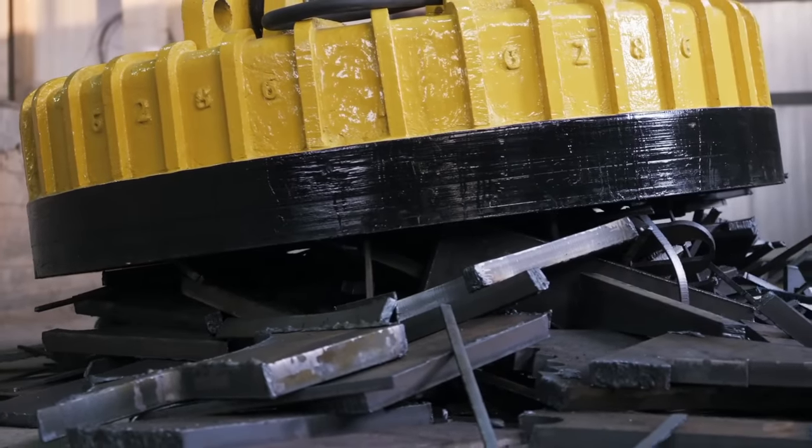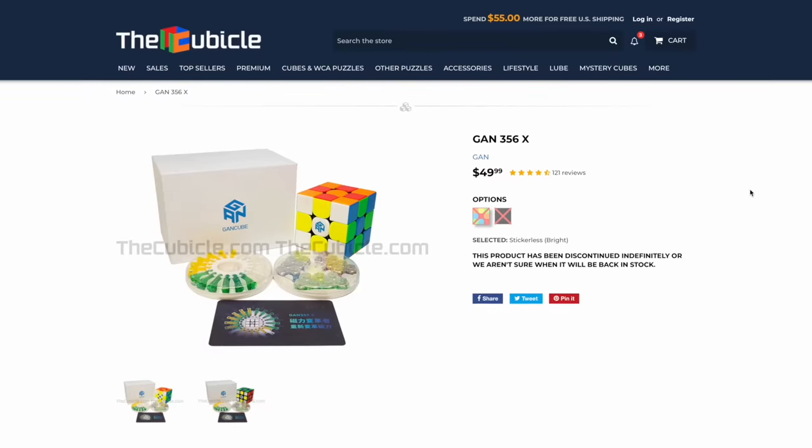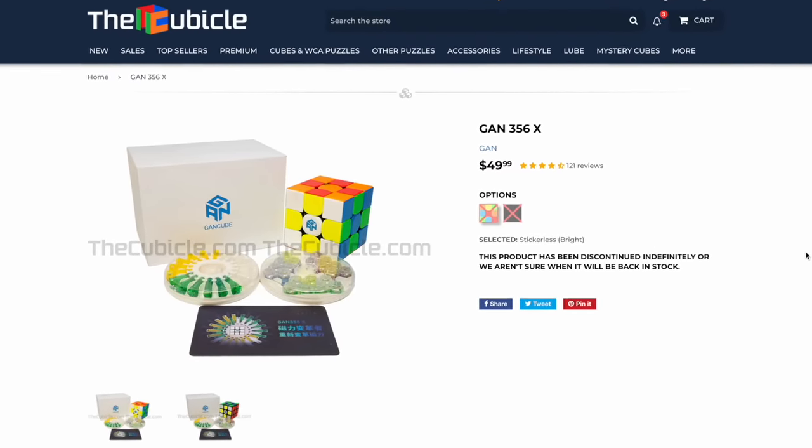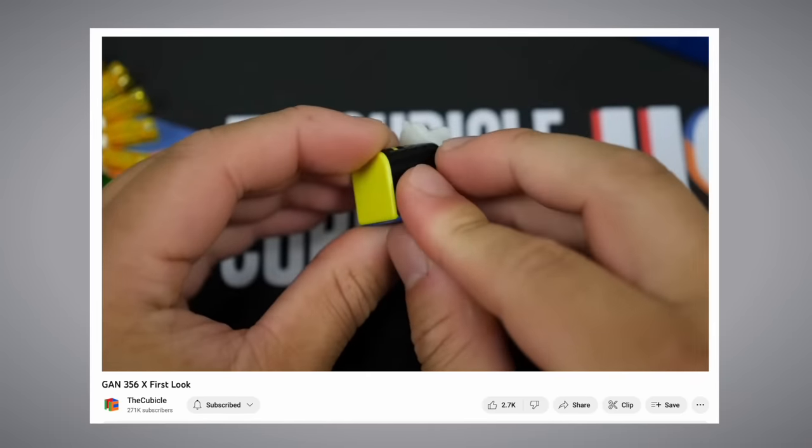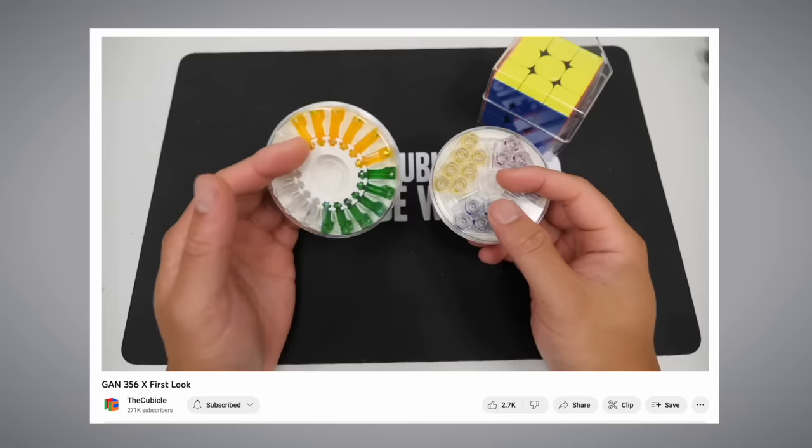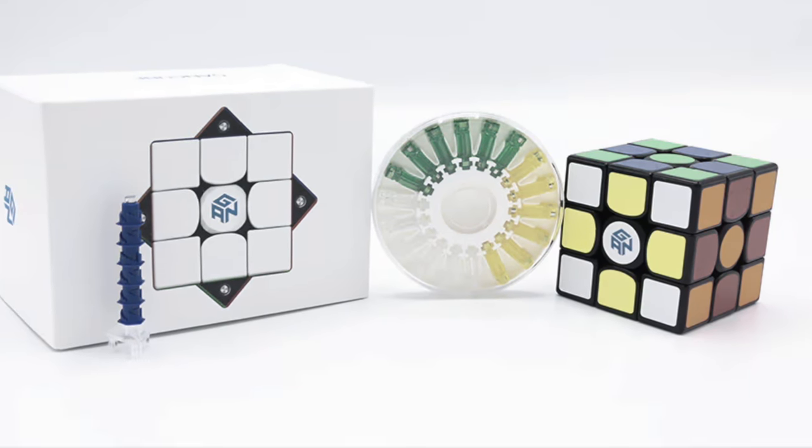Adjustable magnets have come a long way and was seemingly not that easy to achieve. In 2018, the GAN 356X was released. And with that, the first version of interchangeable magnets. The system requires you to literally push out these tubes with magnets in them for each edge piece of the cube. Different tubes had different magnet strengths, which resulted in different magnetic settings. It worked, but you probably see that this isn't ideal.